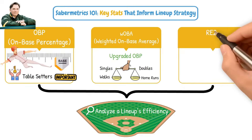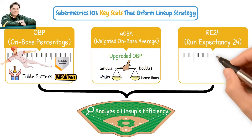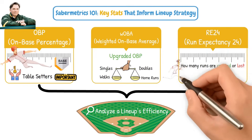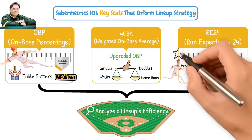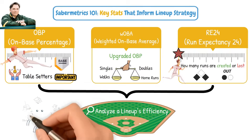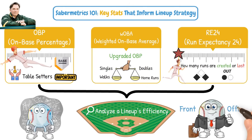Then we have RE24, or Run Expectancy 24, which measures how many runs are created or lost based on a specific in-game situation — for example, men on first and third with one out. You can then use this tool to see who comes up most frequently in high-leverage situations. These ideas aren't theoretical; they're used by real front offices to build smarter batting orders.